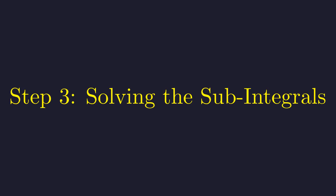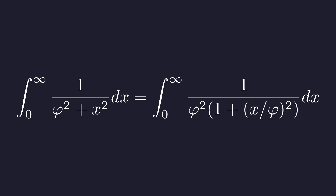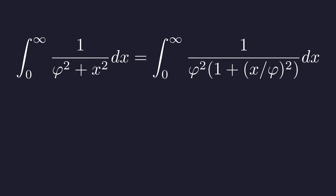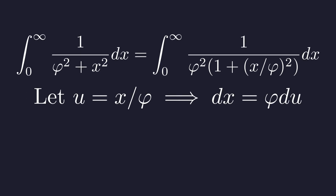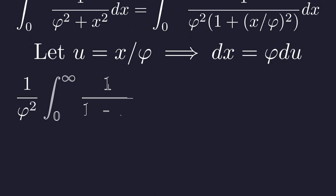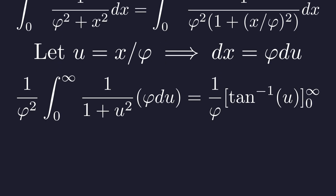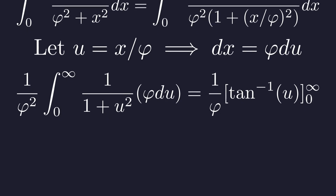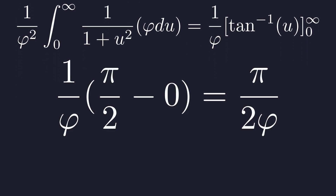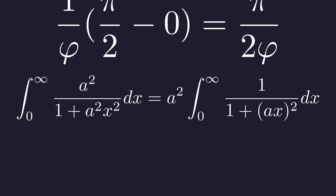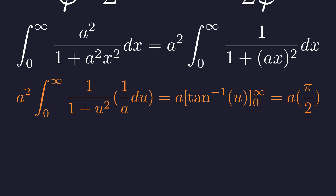We can now solve these two simpler integrals by evaluating each piece separately. For the first integral, we factor out phi squared from the denominator to get it into standard arctangent form, using a U substitution letting U equal X over phi. Substituting and integrating gives 1 over phi times arctangent of U, which evaluates from 0 to infinity as pi over 2 phi. For the second integral, letting U equal A times X, after substitution and integration this evaluates to A times pi over 2.